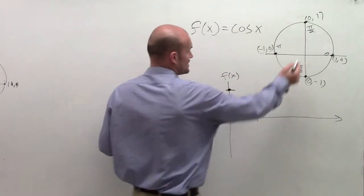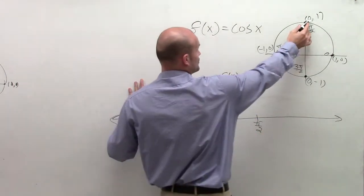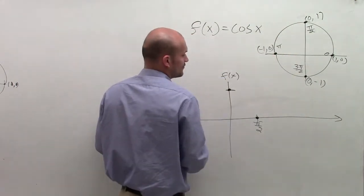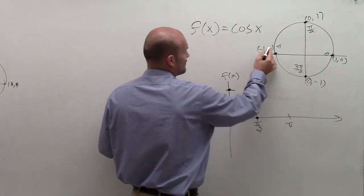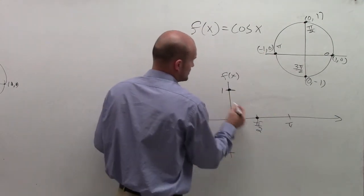Then our next angle is π/2. At cosine of π/2, my value is 0. At cosine of π, I have a value of negative 1. So I'm going to go down to negative 1.